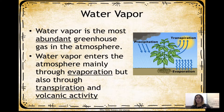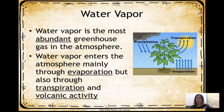Water vapor is the most abundant greenhouse gas in the atmosphere. It is the water that has evaporated up into the clouds, entering the atmosphere mainly through evaporation. You've probably also heard of transpiration — that's from plants that have absorbed water, which then gets evaporated into the sky. Volcanic activity also puts off a lot of heat and moisture, so a lot of water vapor comes from volcanic activity as well.